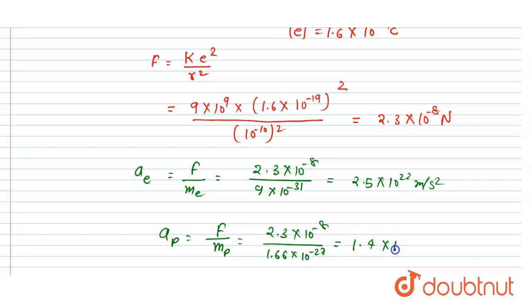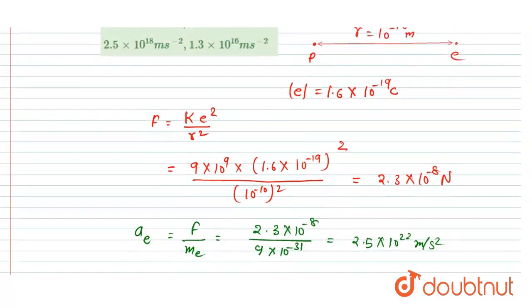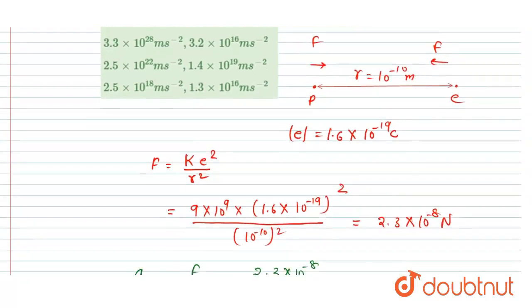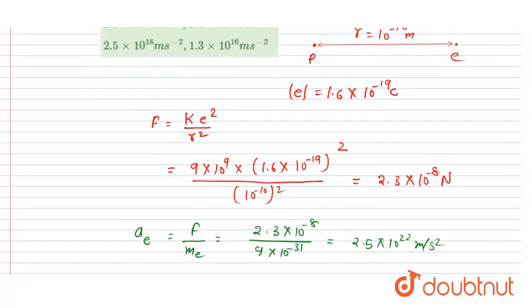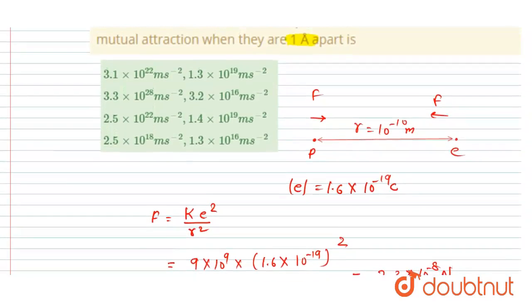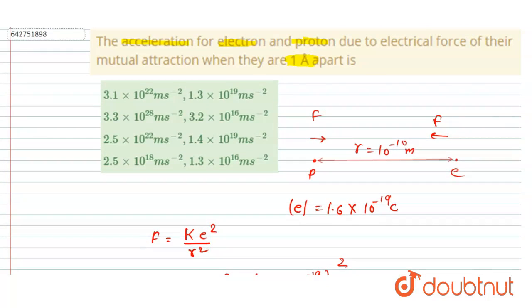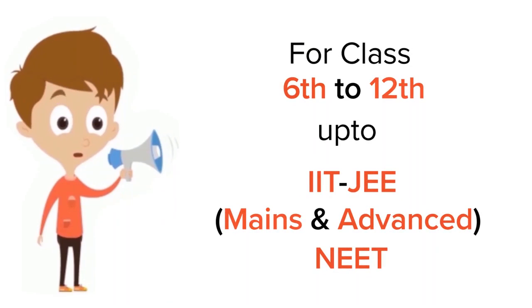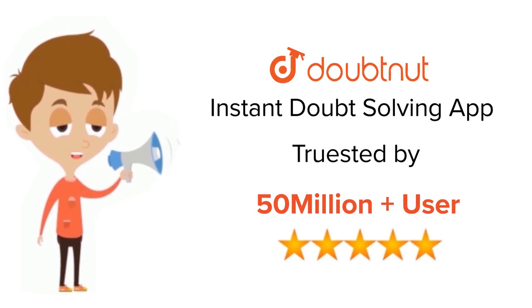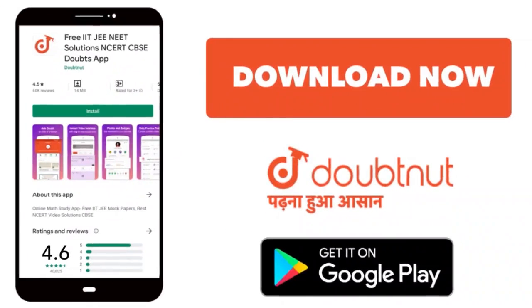So after division you will get 1.4 × 10^19 meter per second square. Now you could see the correct option here, right? 2.5 × 10^22 is the acceleration of the electron and 1.4 × 10^19 is the acceleration of proton, so C is the correct option. Thank you. For class 6 to 12, IIT-JEE and NEET level, trusted by more than 5 crore students, download Doubtnut today.